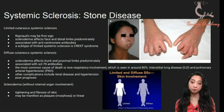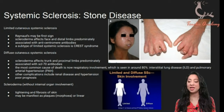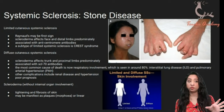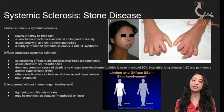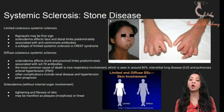Diffuse cutaneous systemic sclerosis extends beyond the elbow, involving the lungs — leading to pulmonary hypertension — as well as renal disease and associated hypertension. It is related to SCL-70 antibodies. The memory aid: limited cutaneous — C for cutaneous, C for centromere; diffuse cutaneous — more systemic, S for systemic, S for SCL-70. This is asked a lot on the exam — if you just remember the antibodies that should be enough.